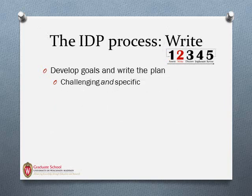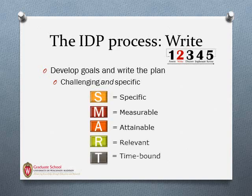The next step is to develop goals and write the plan. After taking time to assess and reflect, now you're ready to develop goals and actually write your IDP. Your goals should be challenging and be attached to a specific and realistic implementation plan. We recommend using the SMART model for creating goals: your goals should be specific, measurable, attainable, relevant, and time-bound. As you develop your goals, think about your responsibilities as a graduate student or postdoc, milestones you need to achieve, expectations of your training program, and scholarly activities you would like to pursue.